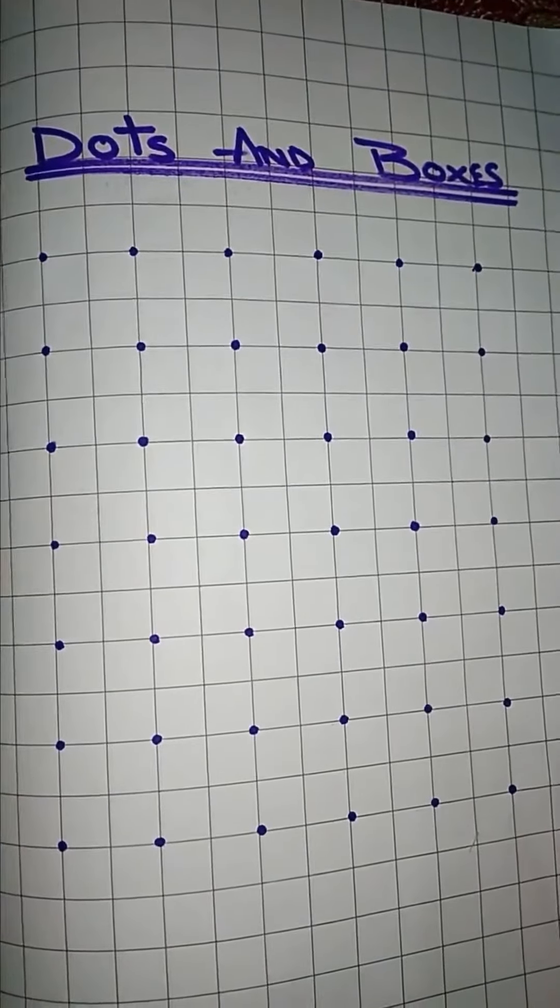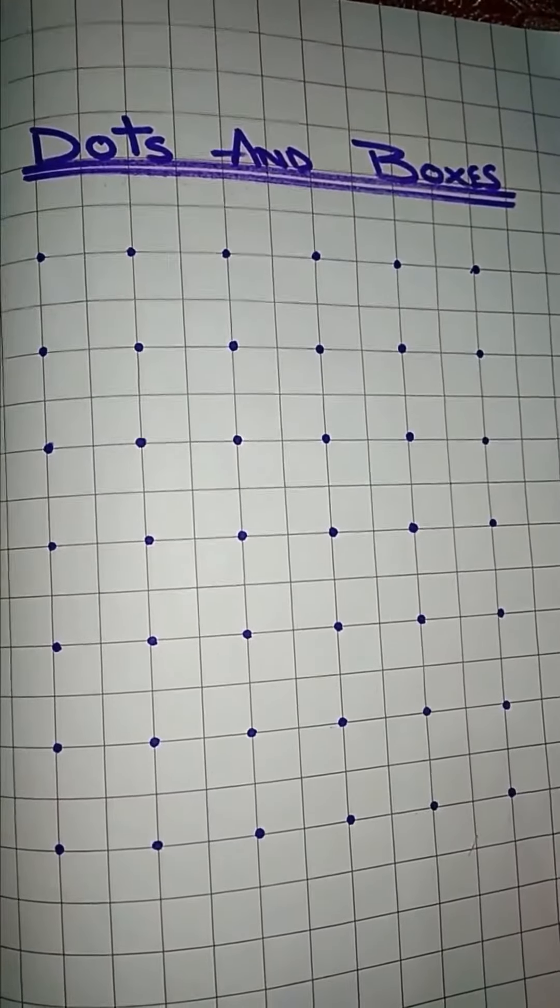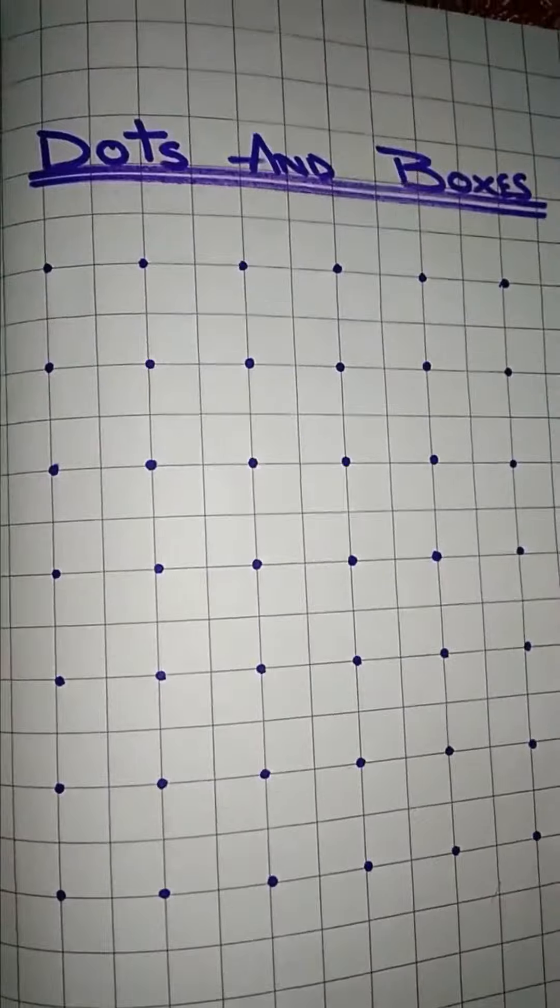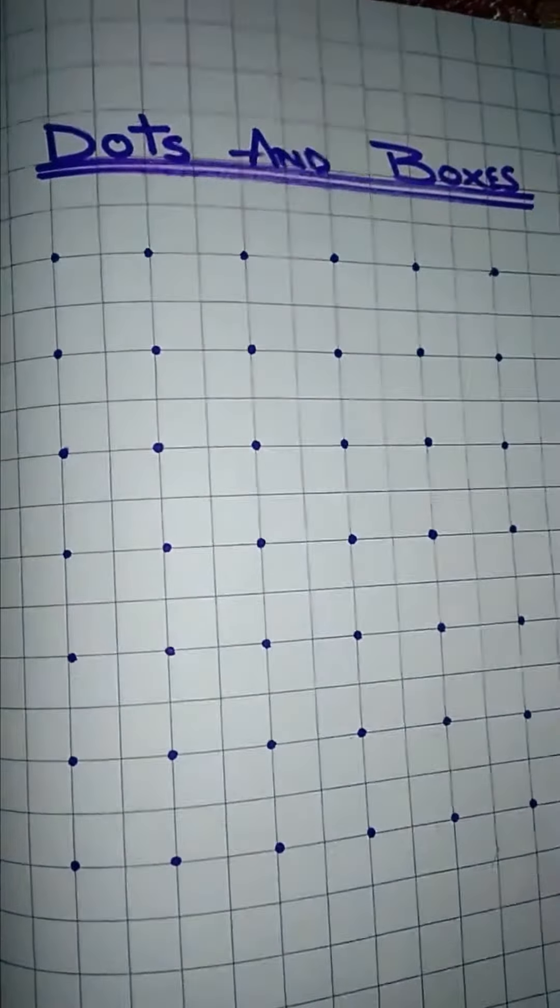So what are we going to practice? We are going to practice standing line and sleeping line but with a difference. This time we are going to play. What are you going to play? Dots and Boxes.